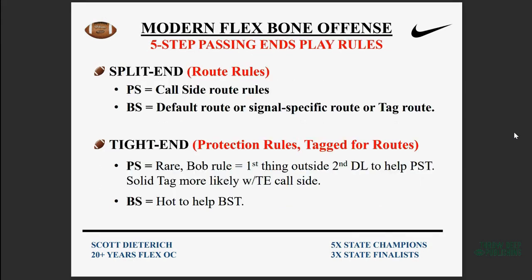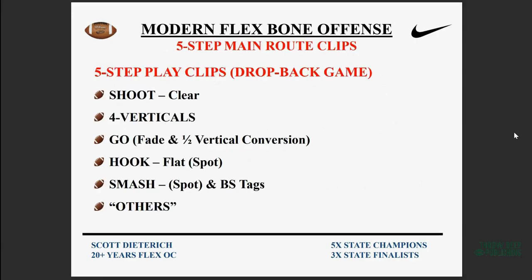Route rules are the same basic as three-step. We don't run mirrored routes in five-step games, so the backside receiver is going to have a default rule, signal-specific route, or tag route. Tight end is usually backside if we use him in these scenarios, but we can incorporate the tight end in the passing game — we just have to be creative with terminology and verbiage. The backside is hot to help. Main concepts with five-step: the shoot, which is shot plus one, a little deeper out route; four verts; a go that can become a fade; three- and five-step connected; the half-vertical conversion; hook smash; and a couple others.